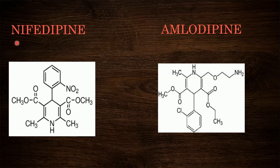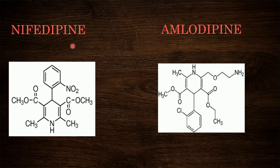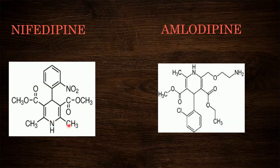The next class of drugs is 1,4-dihydropyridines. The first drug in this class is nifedipine. Nifedipine contains the 1,4-dihydropyridine nucleus — a six-membered ring containing nitrogen with hydrogen atoms at the first and fourth positions. Two methyl groups are present at the second and sixth positions, two methyl esters at the third and fifth positions, and at the fourth position nitrobenzene is present.